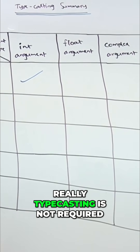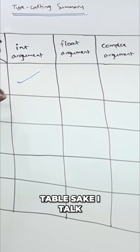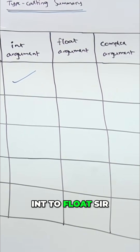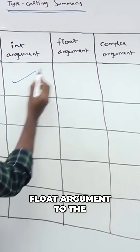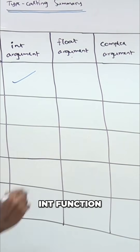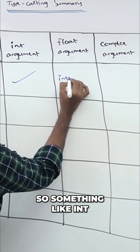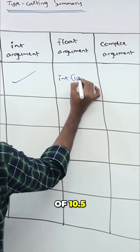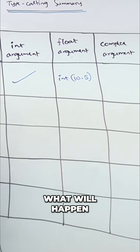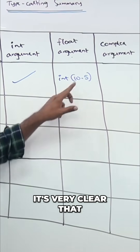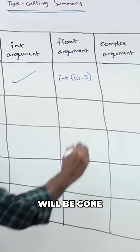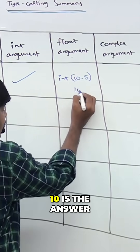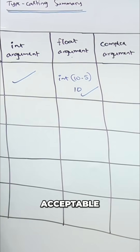Typecasting is not really required for int to int, but for the sake of the table I included it. It is possible to pass a float argument to the int function — for example, int(10.5). What happens is very clear: the digits after the decimal point are dropped by default, so the answer we get is 10.